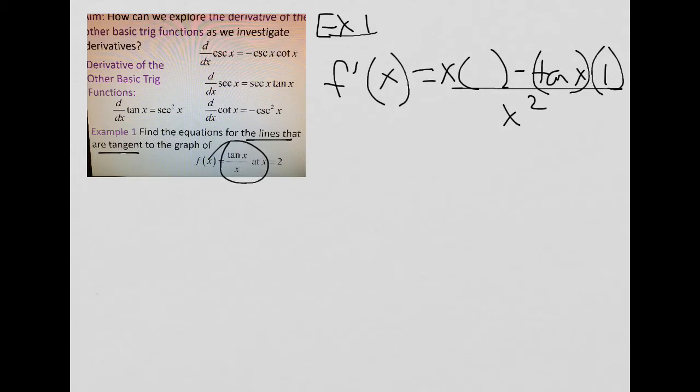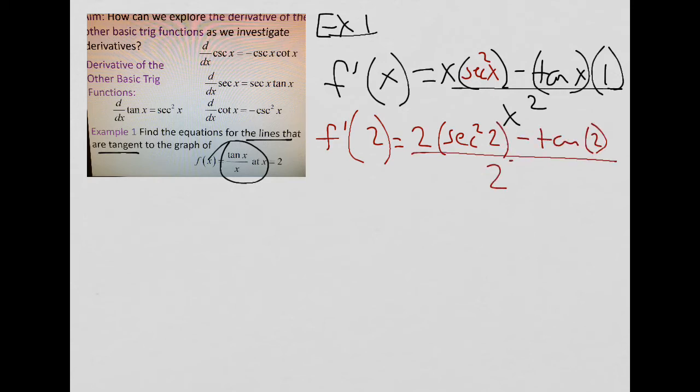So the derivative of the top would be the derivative of tan of x, which is secant squared of x. So now we can actually, at this point, plug in 2 for x and see what we get. And we obviously get something where you're going to need the graphing calculator to come in handy because this is not an exact value.